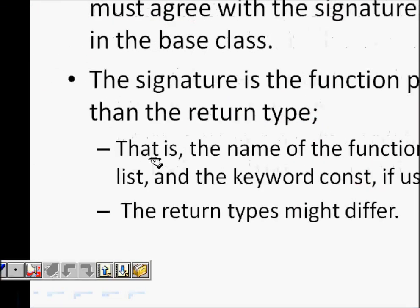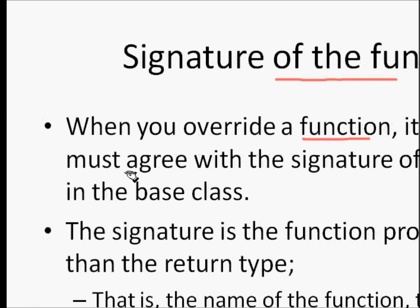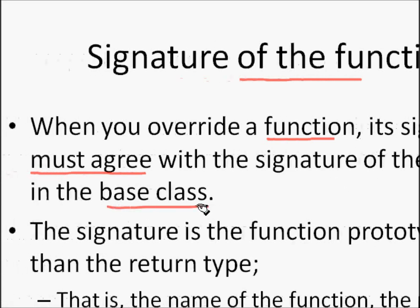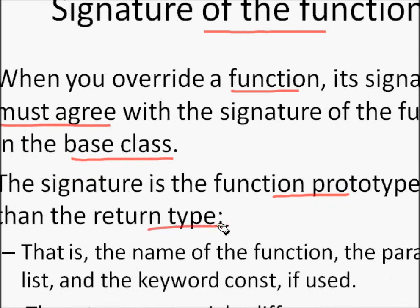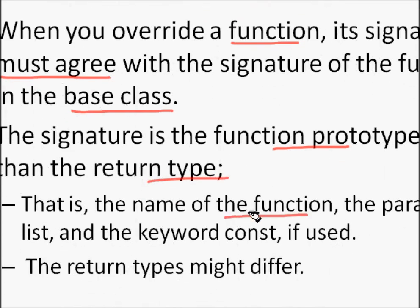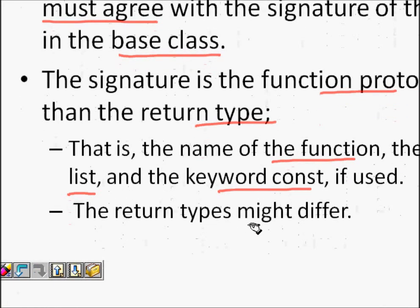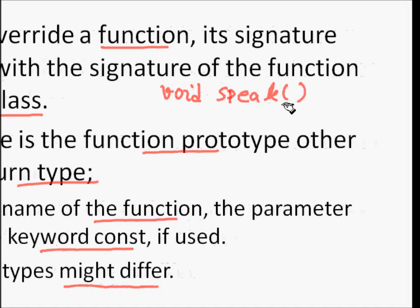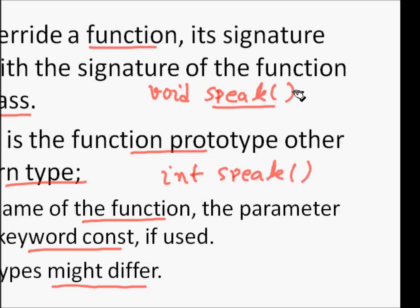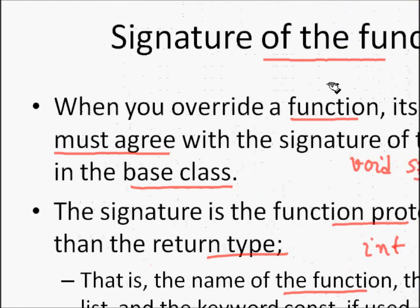The signature of the function is important for overriding. When you override a function, its signature must agree with the signature of the function in your base class, otherwise they will be considered as two different functions. The signature is the function prototype other than the return type — that is, the name of the function, the parameter list, the number of parameters, their types, and the keyword const if it is used. The return type may differ, so void speak and int speak are both fine since the function name and arguments are the same.